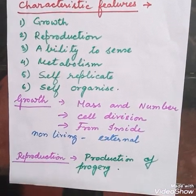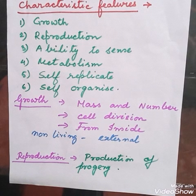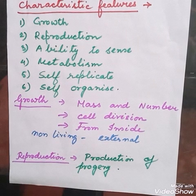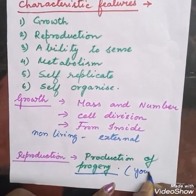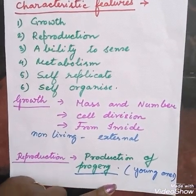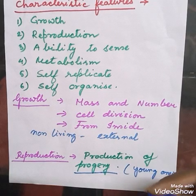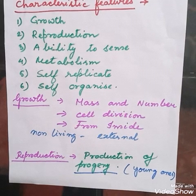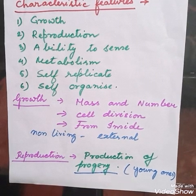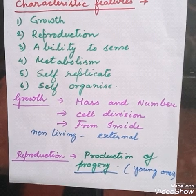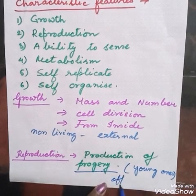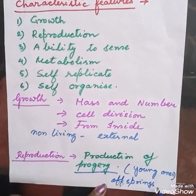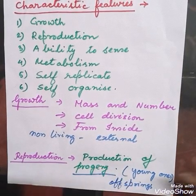Next is reproduction. All living organisms, as you know from previous classes, have the capacity to produce young ones, which is called progeny. So a living organism has the capacity to produce another individual like itself. This ability is called reproduction, and it is a characteristic feature of living organisms where the individual produces their young ones, their progeny, also called offspring.